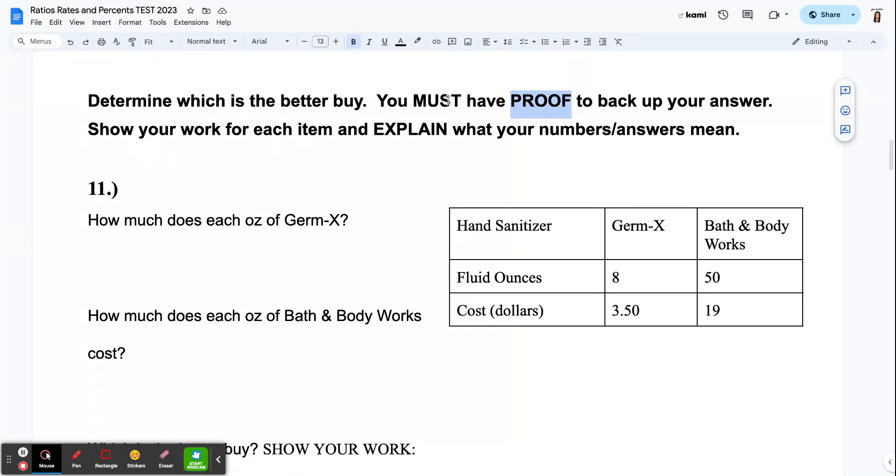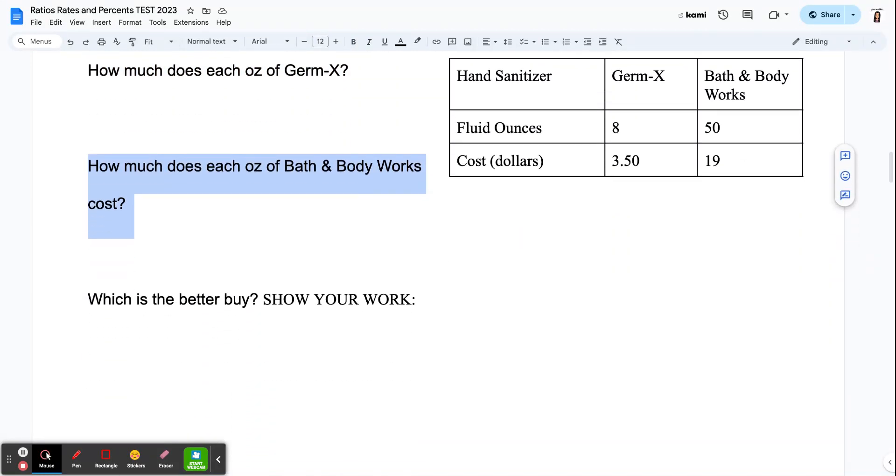So show your work for each item. Explain what your numbers or answers mean. So I broke it down for you to kind of help guide you through this question. You're comparing the cost of hand sanitizer from Germ-X to Bath and Body Works brands. So I'm specifically asking you how much would it cost per ounce of Germ-X? How much would it cost per ounce of Bath and Body Works? And then just tell me which is the better buy.